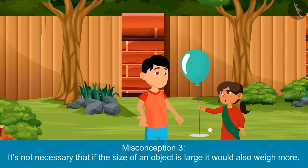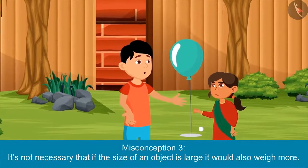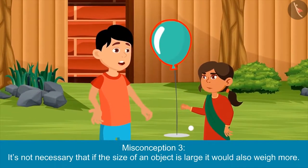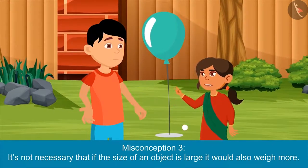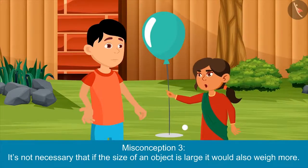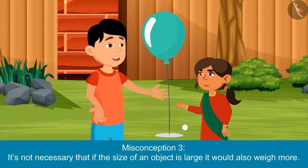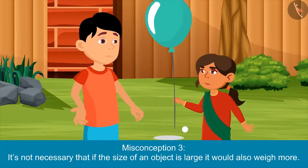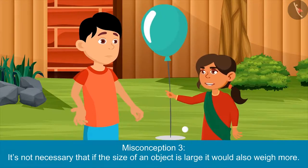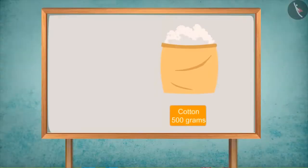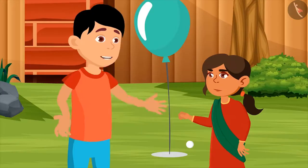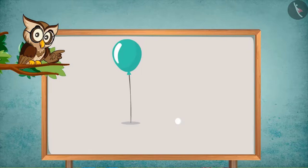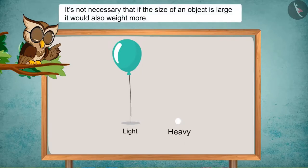Brother, will you play with me? Yes, sure! But first tell me, which of these two is heavier — this big balloon or this small ball? As the size of the balloon is large, it would be more heavy. It's not necessary that if the size of an object is large, it would also weigh more. Try holding both of these. Yes, brother, the balloon is so light! Just now we have seen how a large quantity of cotton was equal to the weight of comparatively less quantity of pulses. Now you understood well.